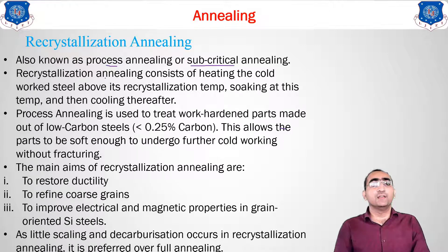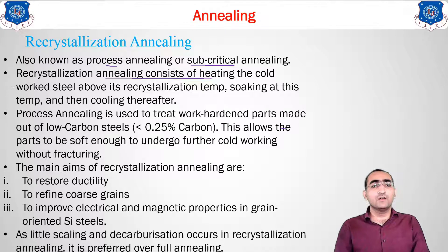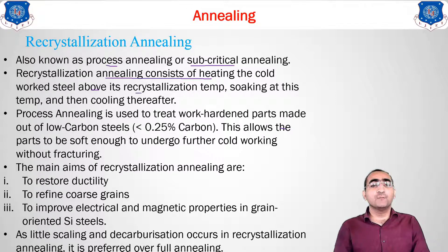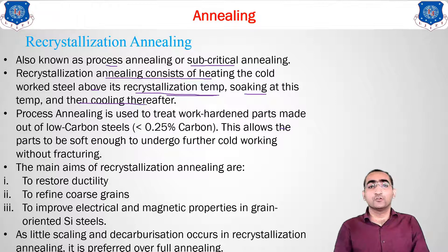What is this recrystallization annealing? This annealing consists of heating the cold-worked steel. According to the application, our annealing method keeps on changing. Over here we are going for cold-work annealing — that is, in the cold state: rolling, forging, or that type of thing. If you are working the material of the steel in that way, then this method is useful. We have to heat the material above the recrystallization temperature, soak it for a particular time, and after that go for the cooling, which should always be done by furnace cooling — that is, always going for a slow type of cooling.